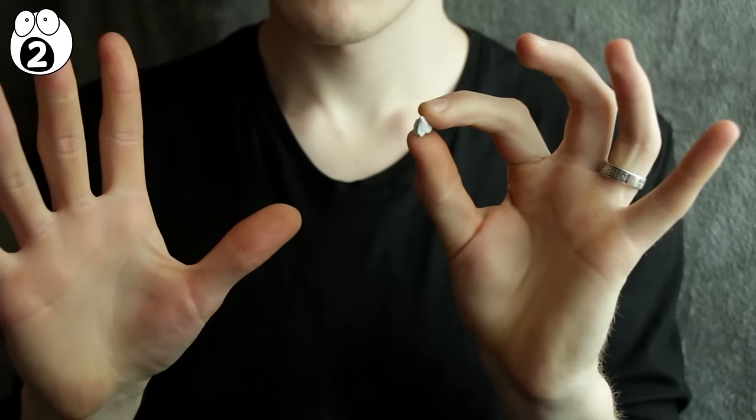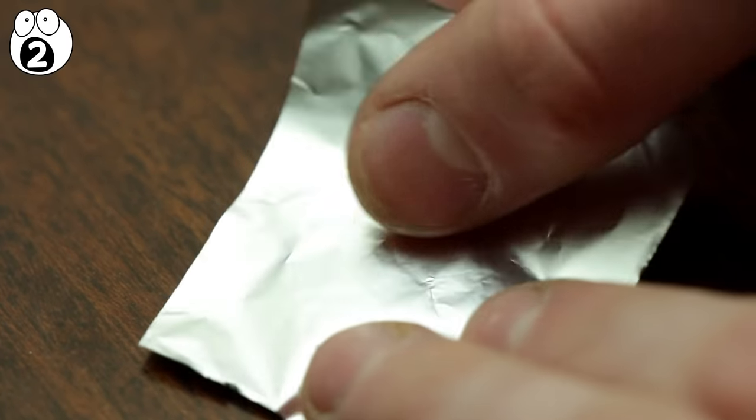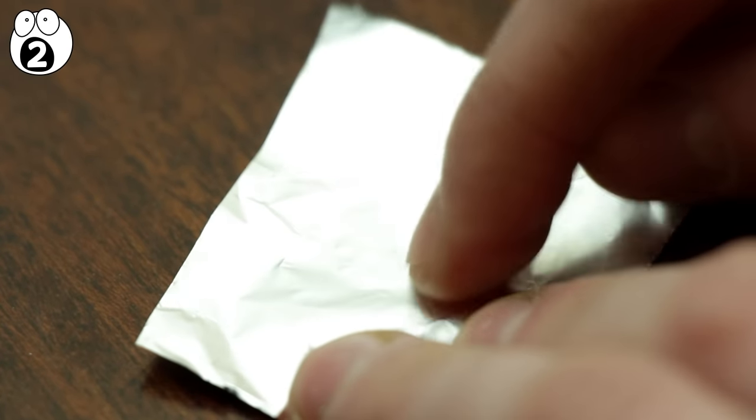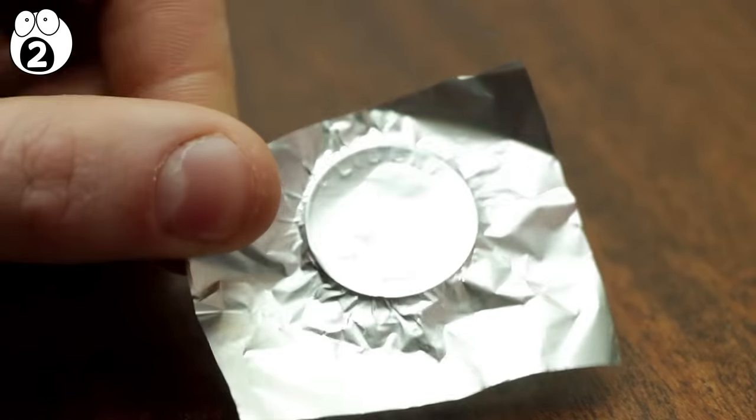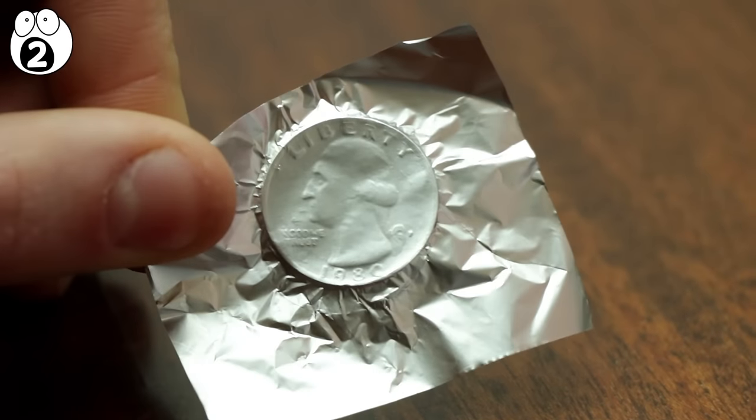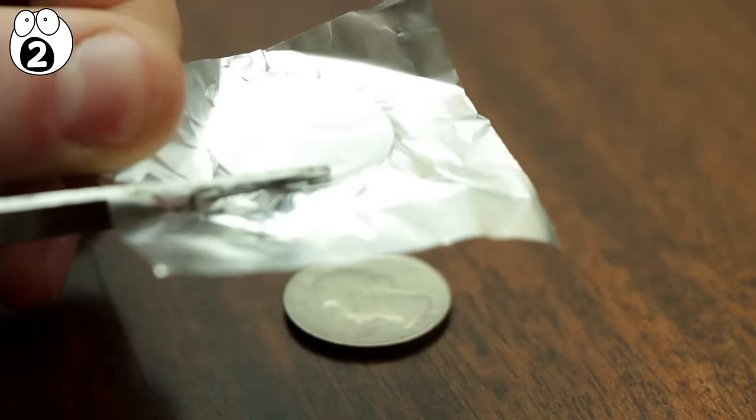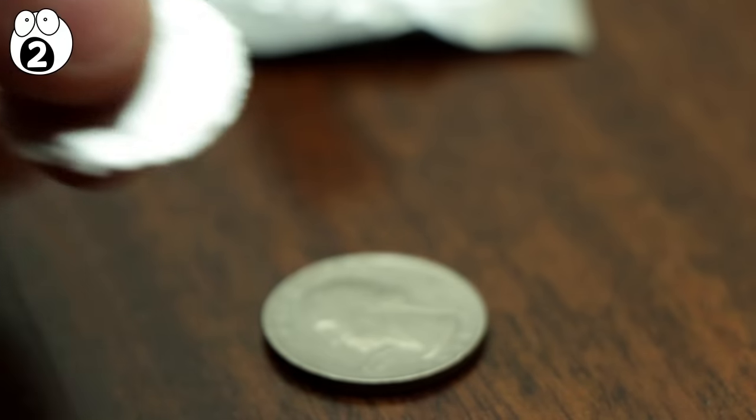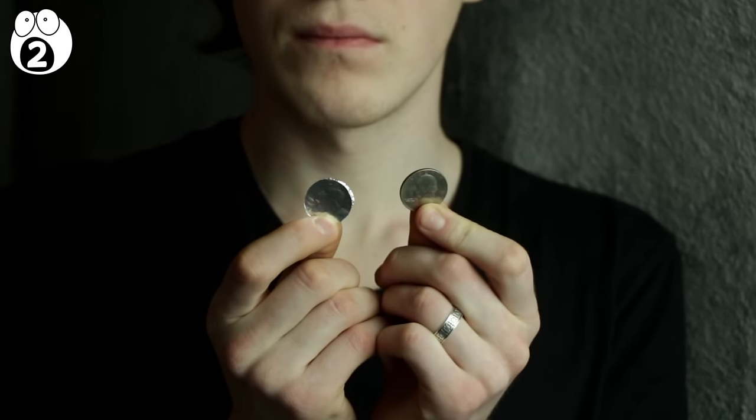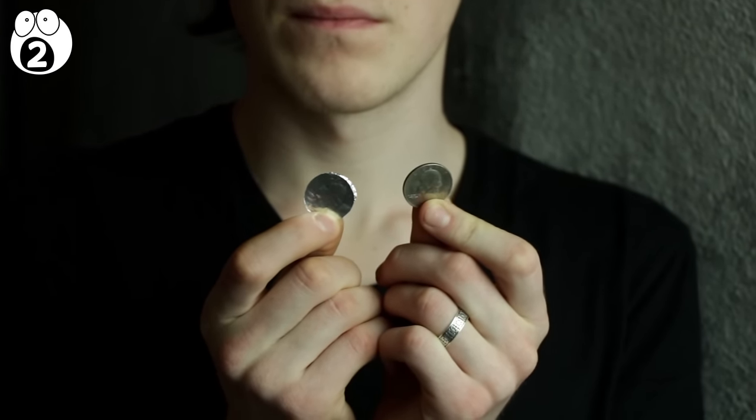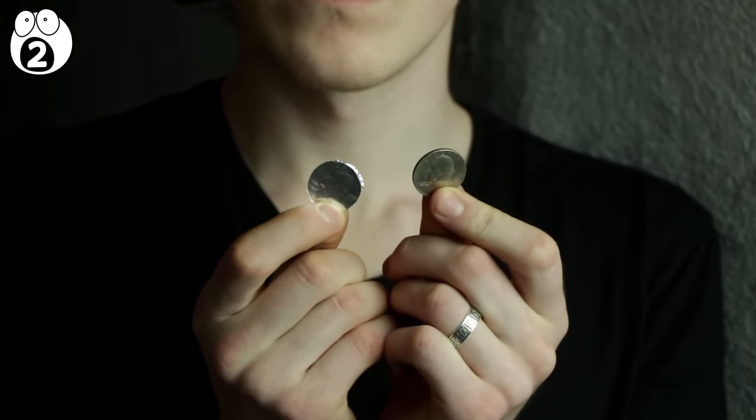What you do is take some tinfoil and make an impression of the coin. In the US, a quarter will work. For British magicians, you'll probably want to use a 10p coin. Trim around the edge of the foil with scissors so you have a foil quarter. At a distance, it should be really hard to tell the difference between the real and fake coin. From here, the rest is simple.